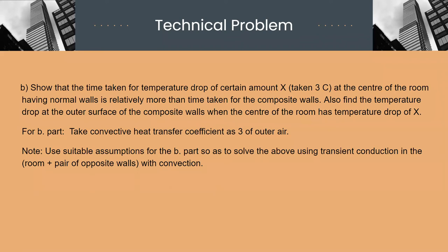For the B part, we have to show that time taken for temperature drop of certain amount X at the center of the room having normal walls is relatively more than time taken for that of the composite walls. And also, we have to find a temperature drop at the outer surface of the composite walls when the center of the room has temperature drop of X.